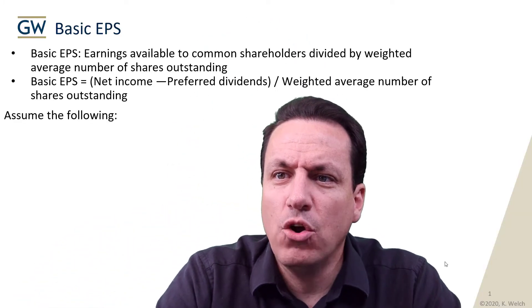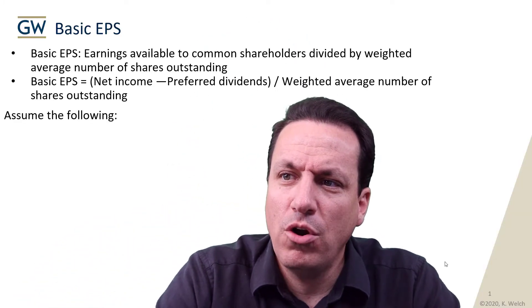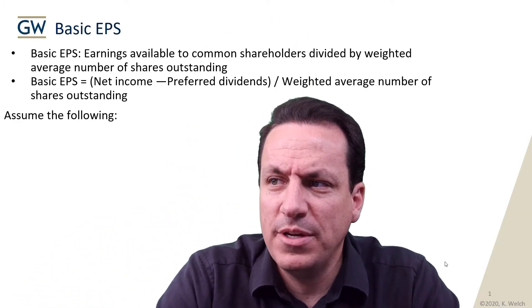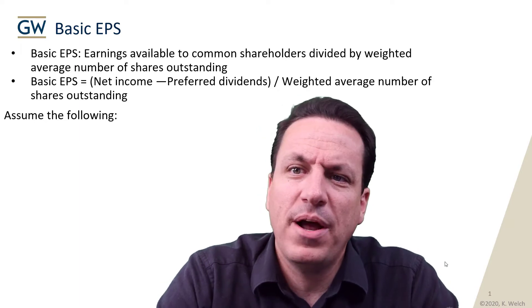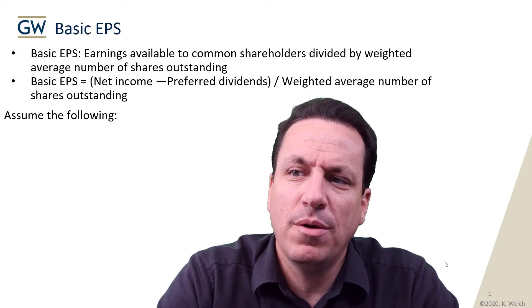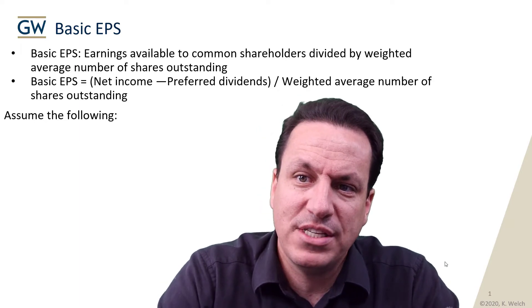In this video we're going to go over basic earnings per share using an example and talk about how you calculate it. Basic earnings per share is earnings available to common shareholders divided by the weighted average number of shares outstanding.